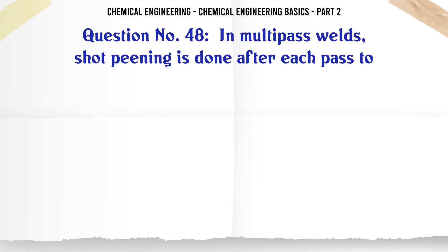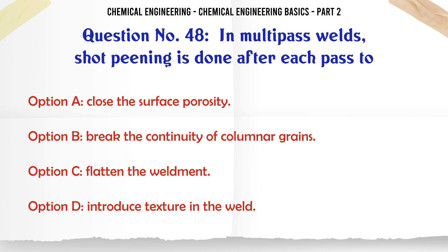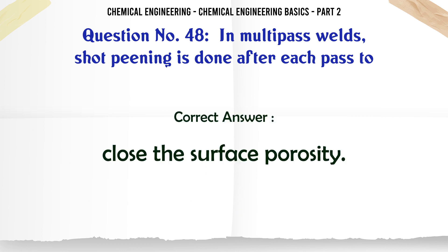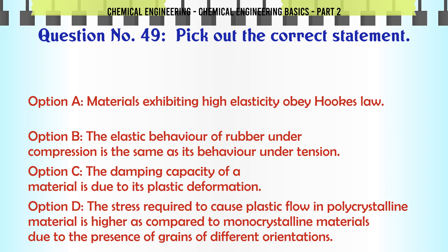In multipass welds, short peening is done after each pass to: a) close the surface porosity, b) break the continuity of columnar grains, c) flatten the weldment, d) introduce texture in the weld. The correct answer is: close the surface porosity.